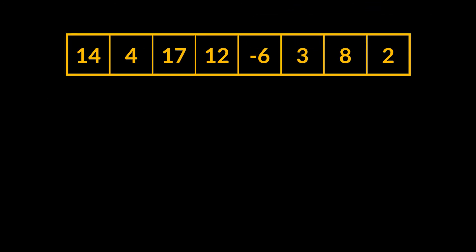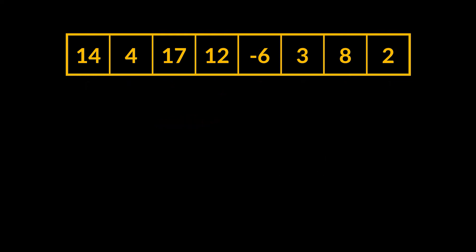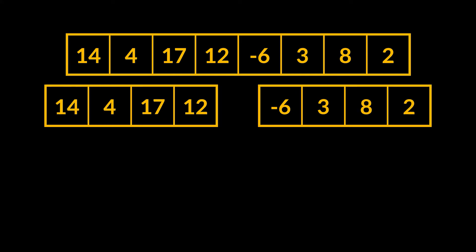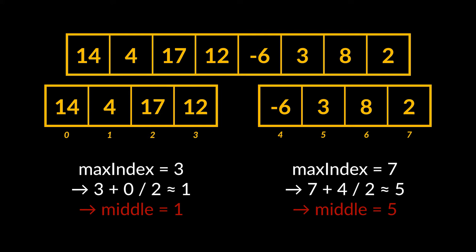Let's take an example array and try to sort it using the merge sort algorithm. This array holds eight integers, so its maximum index is seven and its middle index is three. We need the middle index because the divide step first proceeds by dividing the array in half to obtain two subarrays — in our case, each storing four elements. The divide step keeps dividing until each subarray consists of only a single element, so we divide each subarray again by calculating the middle index of each. In our case, these indices will be one and five.